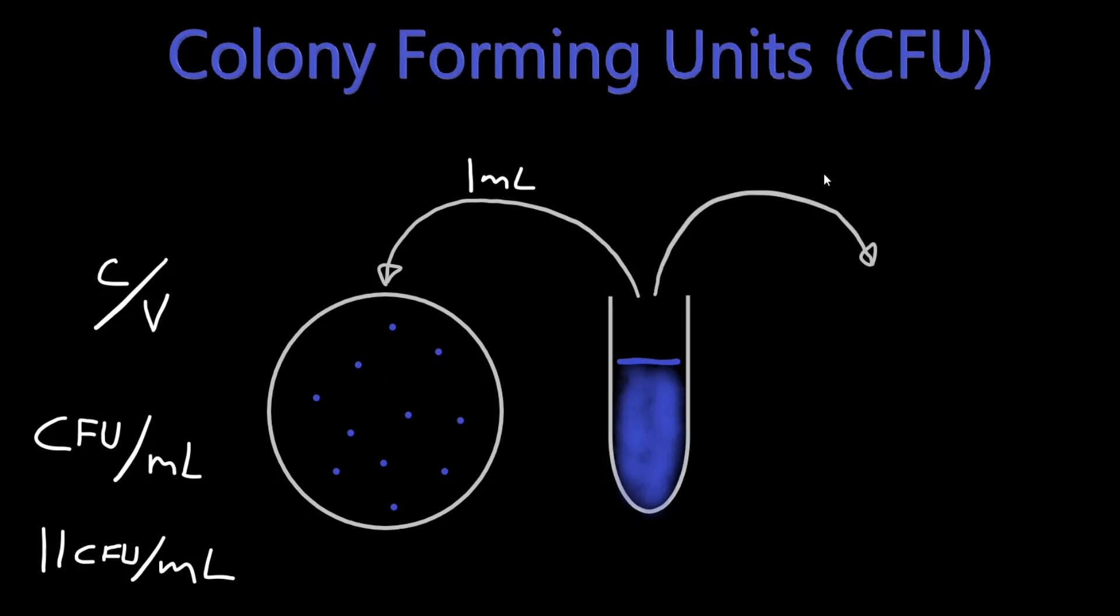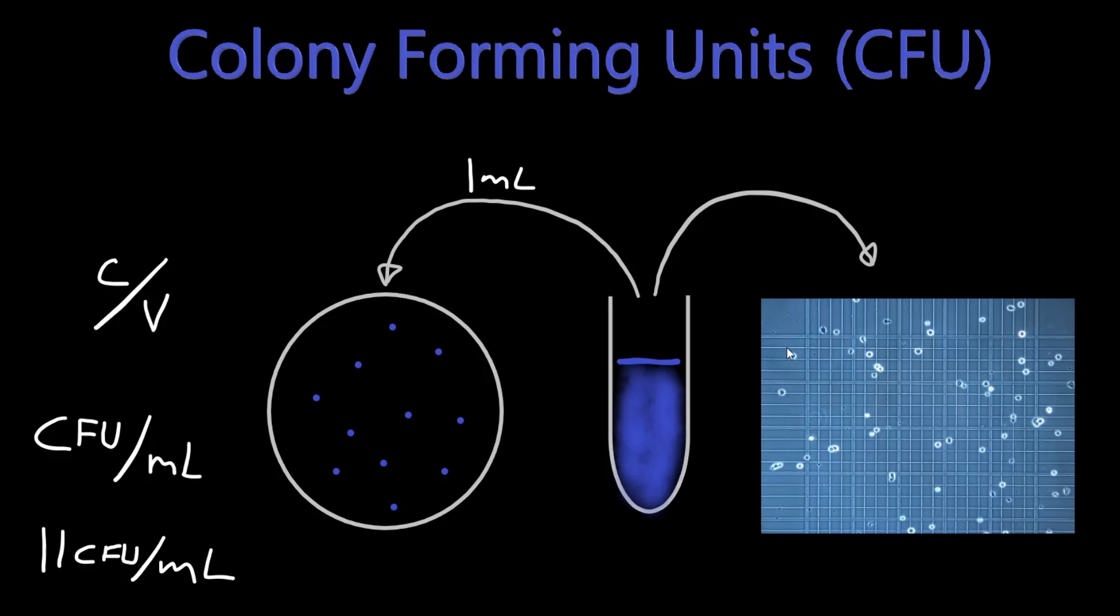But another method that's quite commonly used in microbiology is we have a cytometer here. And what you would do, just take an aliquot, put it on a special glass slide, and this glass slide has a grid on there. You can look under the microscope and count the number of individual bacteria here. So this would include both viable and dead cells.